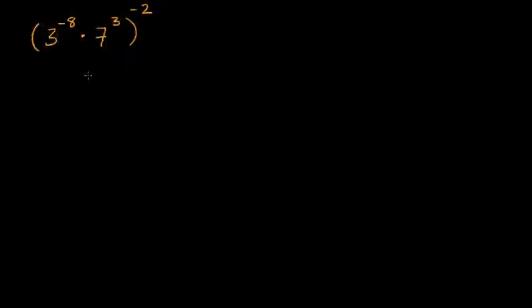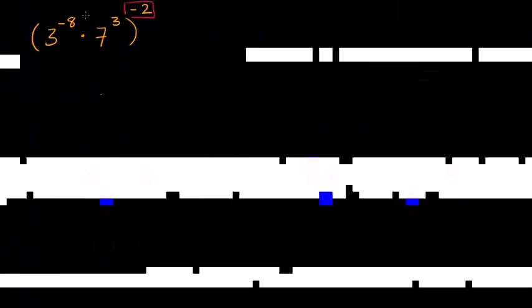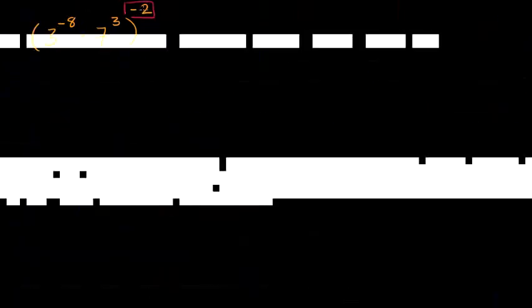So the key realization here — there are a couple of ways you can tackle it — but the key thing to realize is if you have the product of two things and then you're raising that to some type of exponent, that is going to be the same thing as raising each of those things to that exponent and then taking the product.